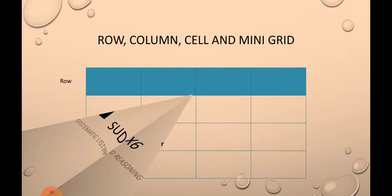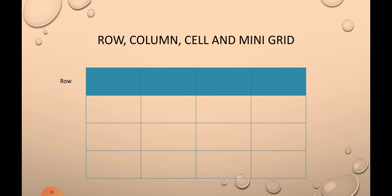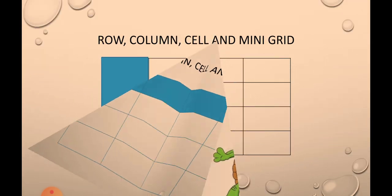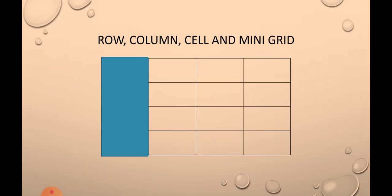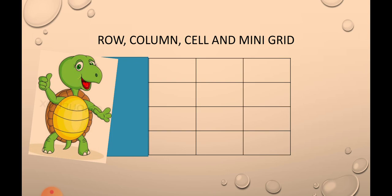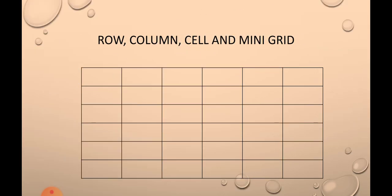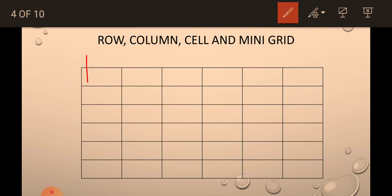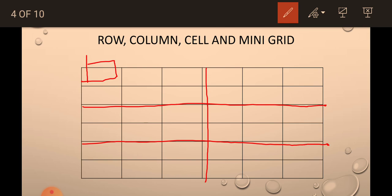First you have to understand the table. The horizontal group of cells is called a row. The vertical group of cells is called a column. The cell is the smallest element where the numbers come. And the mini grid — if this is our 6x6 grid, it will be divided so that all 6 cells come in one small mini grid.